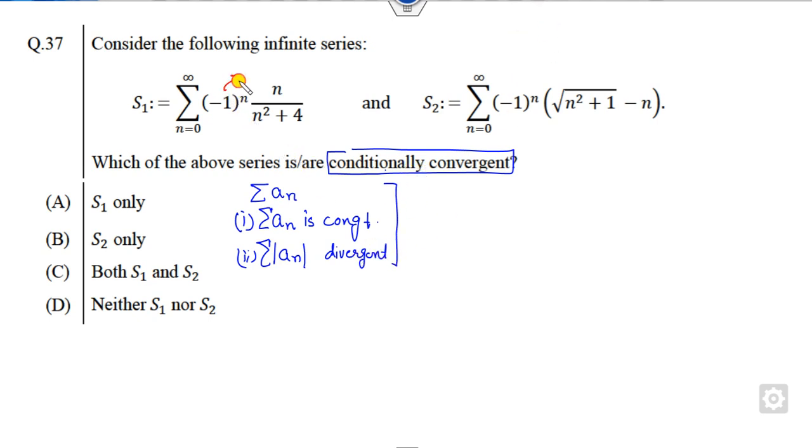Now here is minus 1 raised to power n, so it means you have to apply the Leibniz test for the first part. What is the Leibniz test? You have to first prove a_n is decreasing, second is a_n goes to 0 as n approaches infinity, and a_n is a positive sequence. This is clearly positive because n varies from 0 to infinity. Again you can see it is a decreasing sequence because the denominator is of higher degree than the numerator.